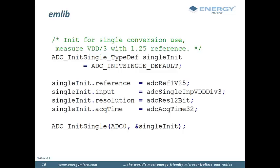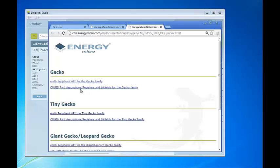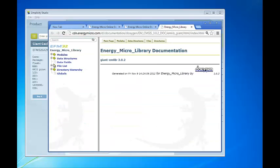The first parameter we pass here is ADC0, which is actually the peripheral struct that we used in CMSIS. The entire source code for EMlib is also provided so it is easy to see what goes on under the hood, or even write your own peripheral drivers based on EMlib. The documentation for EMlib can be found in Simplicity Studio by clicking the API documentation button. This will open the documentation in your browser and you click the EMlib peripheral API link to jump to the EMlib documentation.